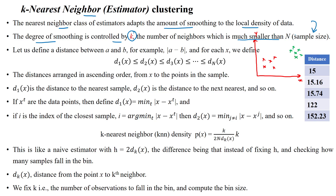Let us define the distance between points a and b, which is denoted by the cardinality of a minus b. For each data point x, the distances can be denoted as d1(x) less than or equal to d2(x), ordering them from closest to farthest.